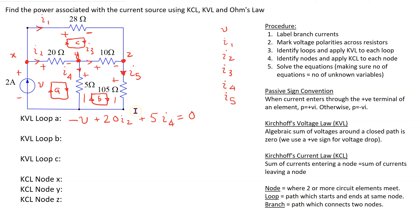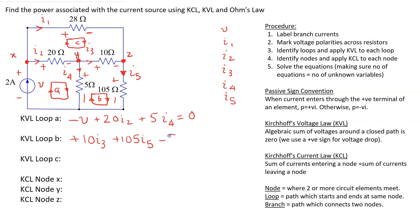This process is repeated for the remaining loops. For Loop B, starting at the 10-ohm resistor: going from plus to minus is a voltage drop, giving plus 10·I3; going from plus to minus again gives plus 105·I5; and then going from minus to plus is a voltage rise, giving minus 5·I4, equal to zero.